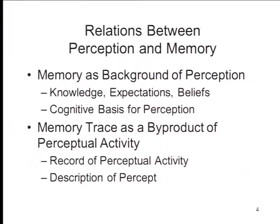So let's talk about memory. There are two different ways in which perception and memory relate to each other. First, memory provides the cognitive background against which perception occurs — it stores our fund of knowledge, expectations, and beliefs that we use to identify and categorize objects. Second, memories are themselves a byproduct of perceptual activity: what we perceive determines what we remember. You can't remember something you didn't perceive. The memory trace is a record of whatever processing you engaged in while perceiving an object — or more familiarly, a memory is just a description of something you perceived in the past.